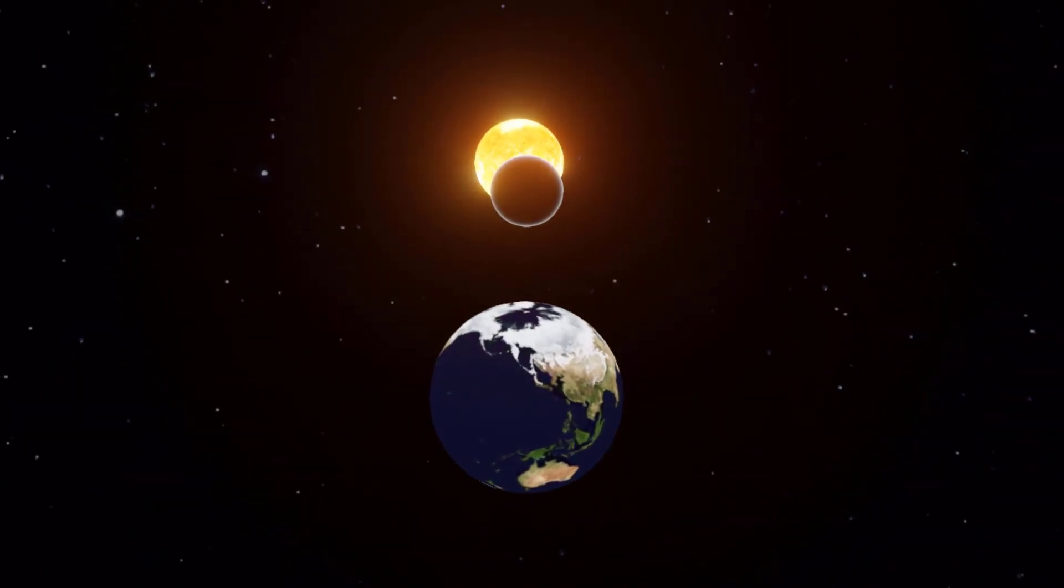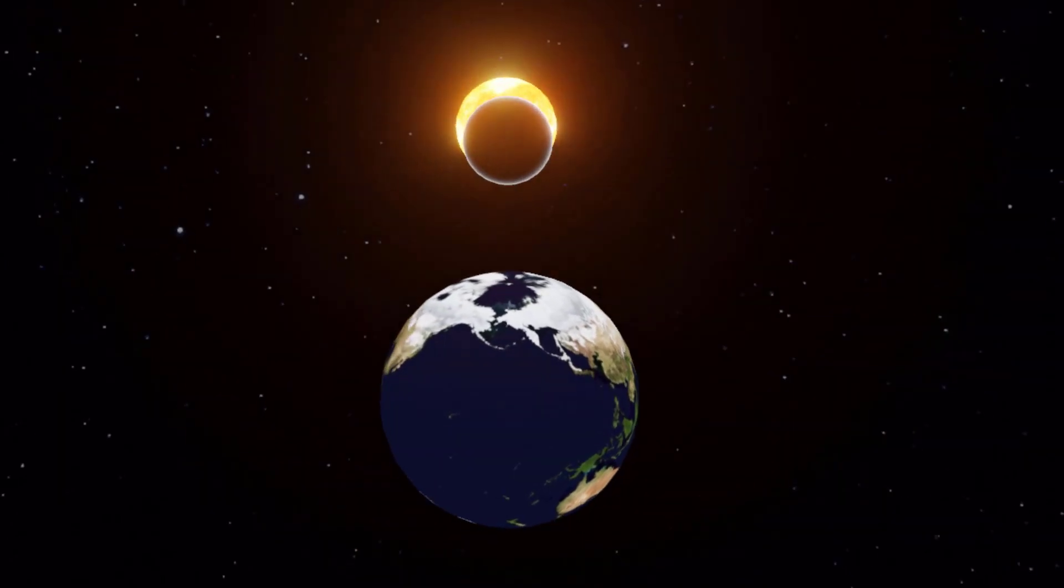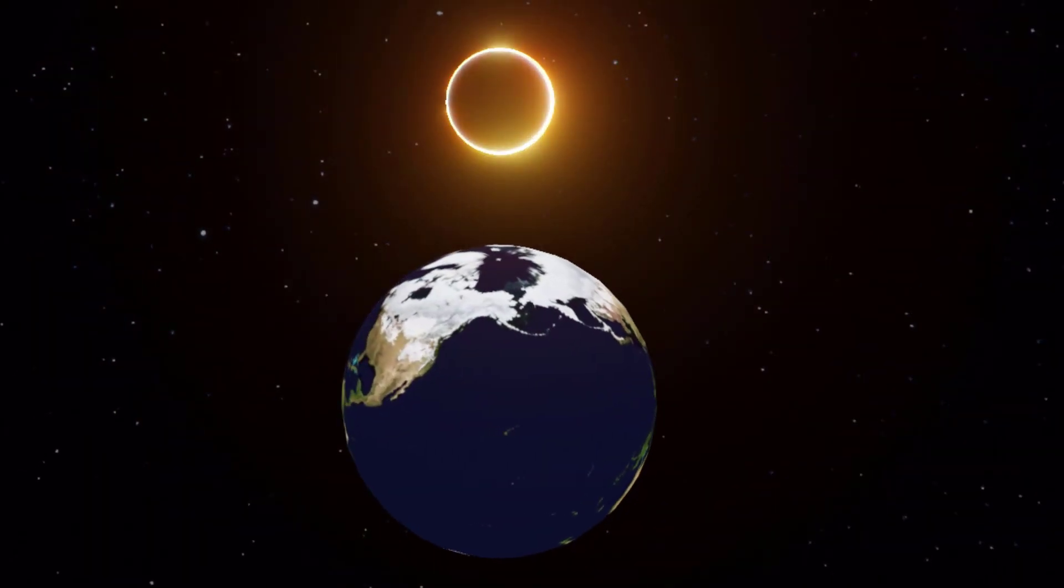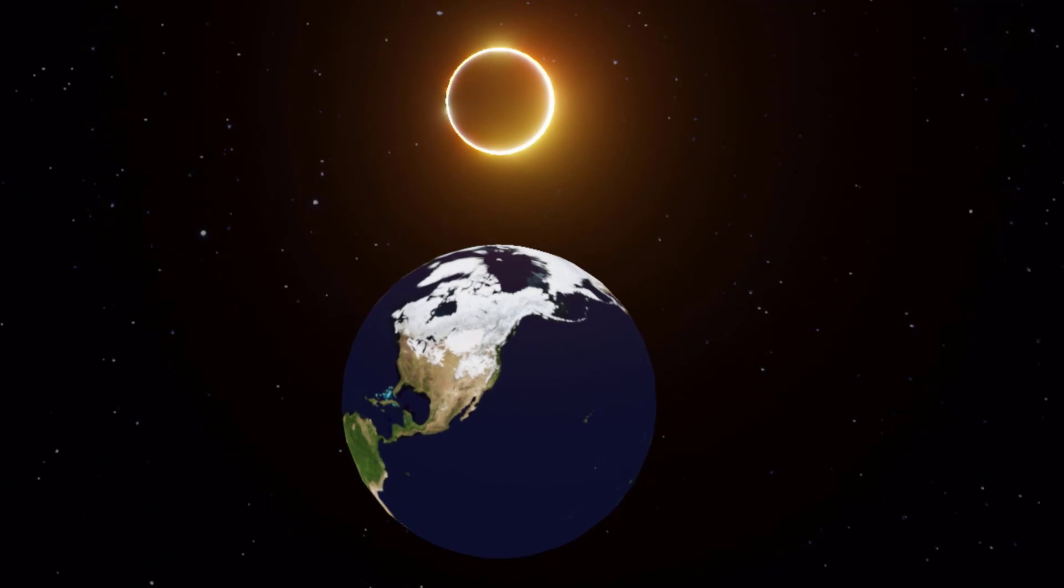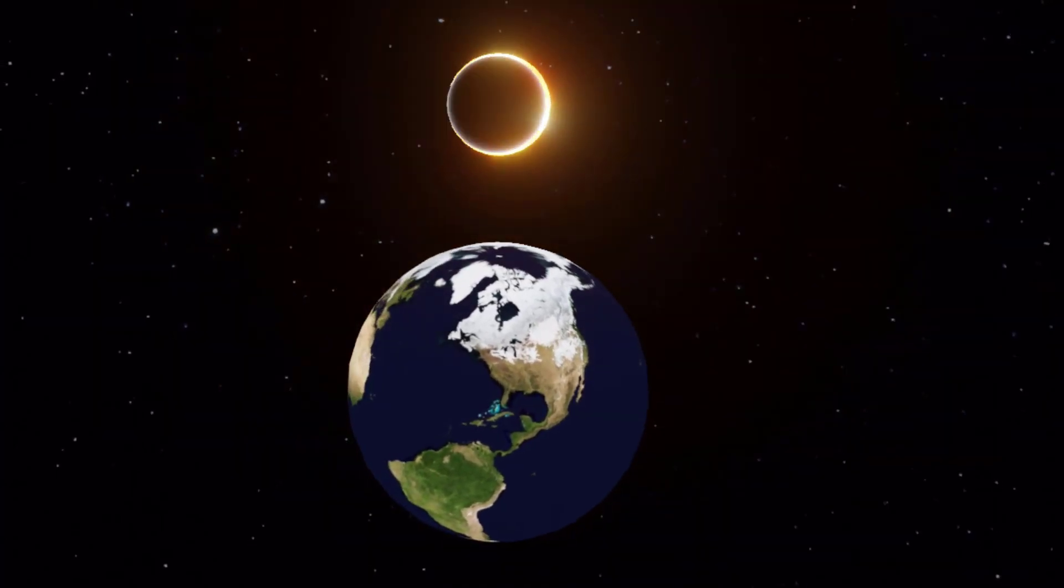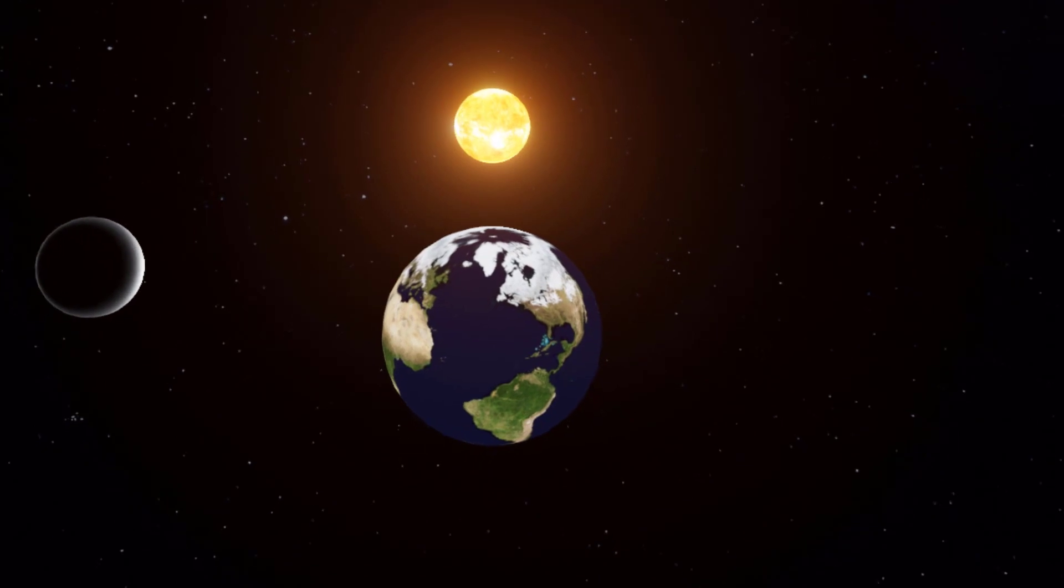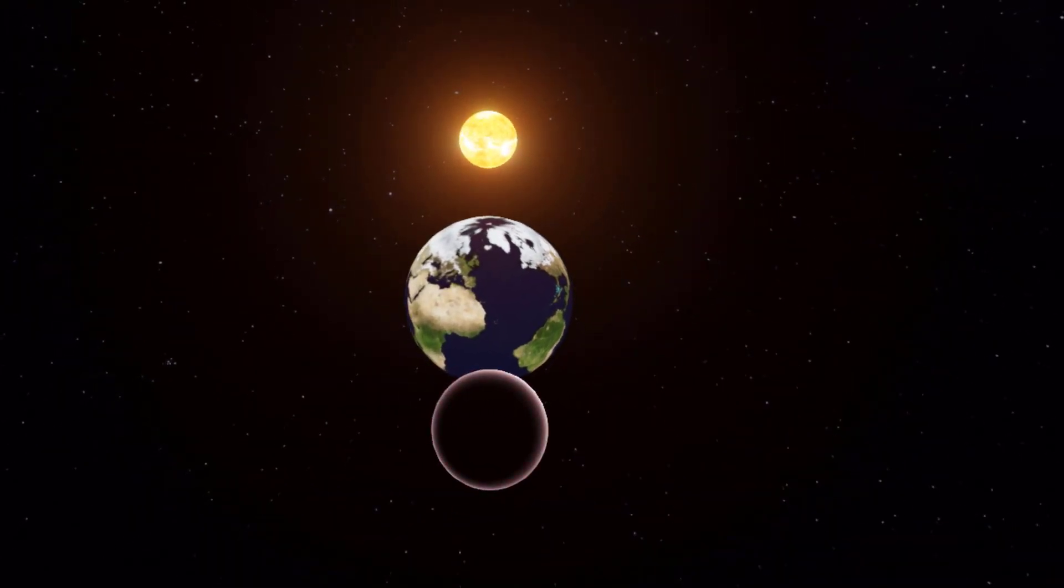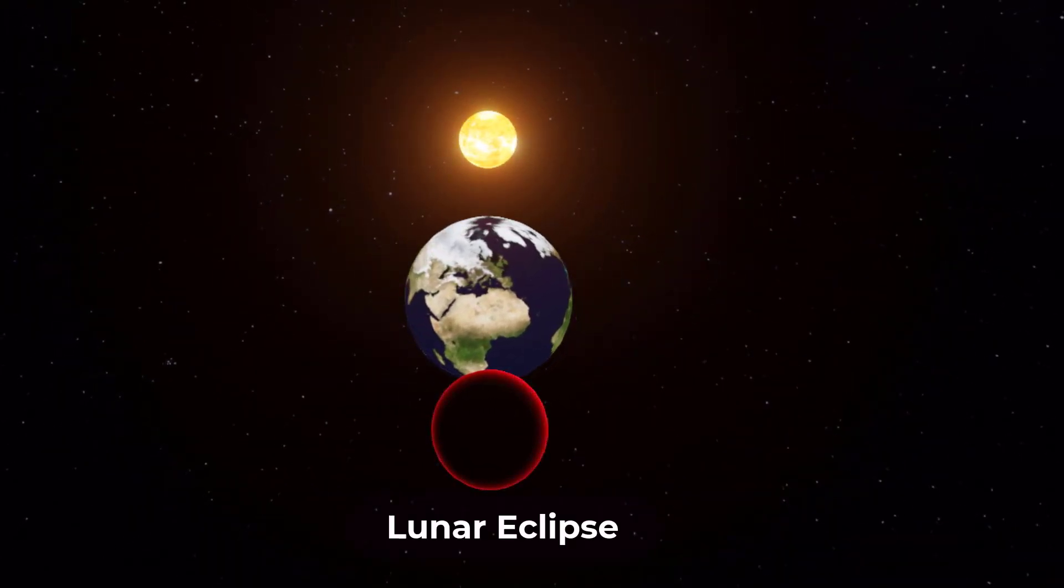Eclipses occur when the earth, moon, and sun align in a certain way. When the moon is in the right position between the earth and the sun, a solar eclipse occurs. And when the earth is in the right position between the sun and the moon, a lunar eclipse occurs.